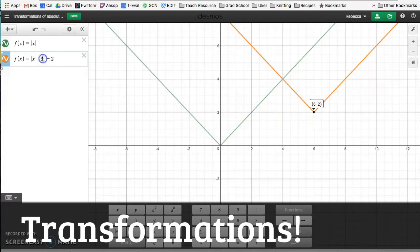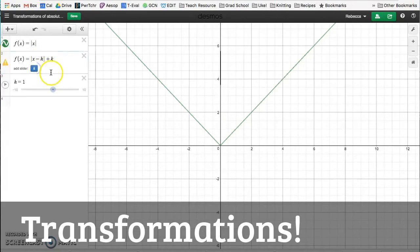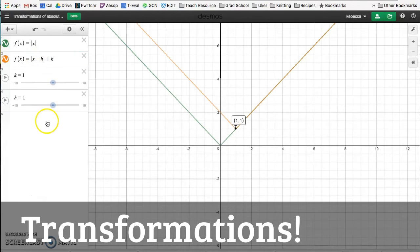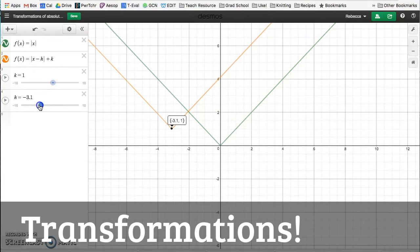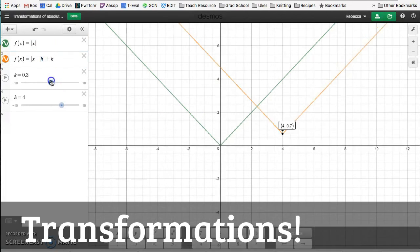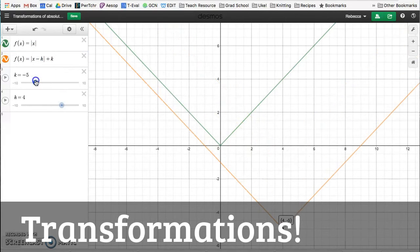So you can actually take this h, k, and I can even add a slider and give it a certain value. So if I made h, this number here, negative, let's say four, I'm going to move to the right four, because it's minus four. So let's say I subtract five, down five.